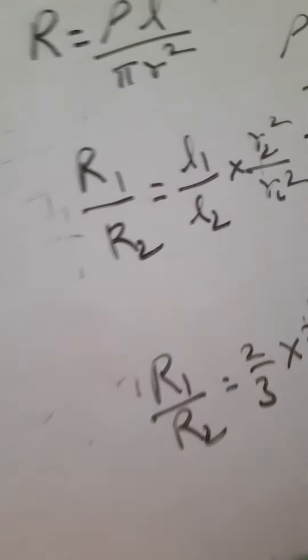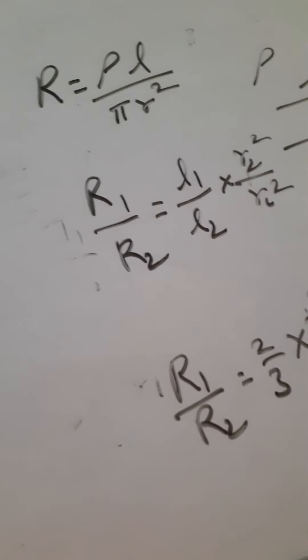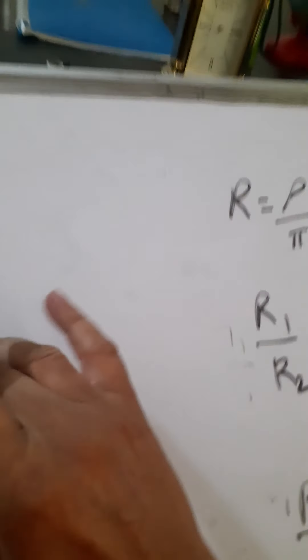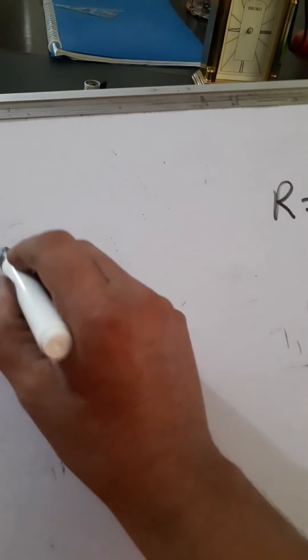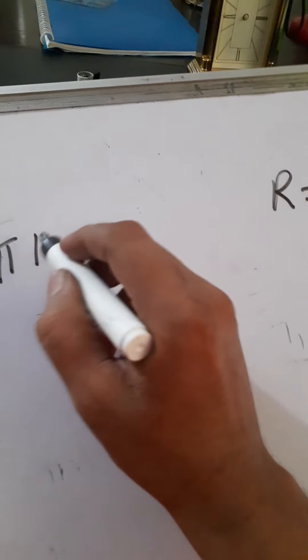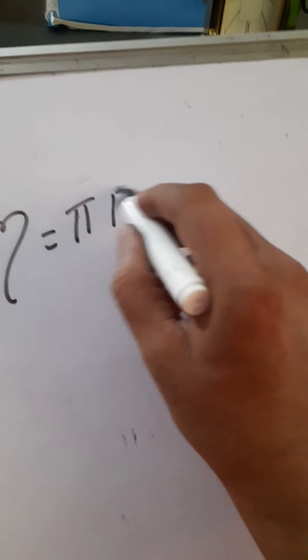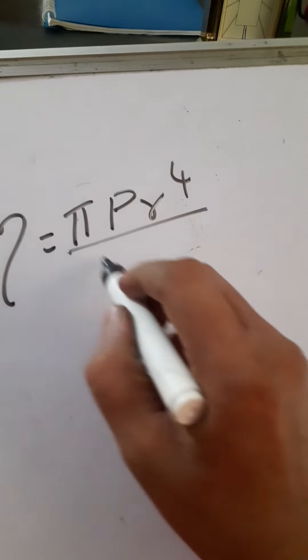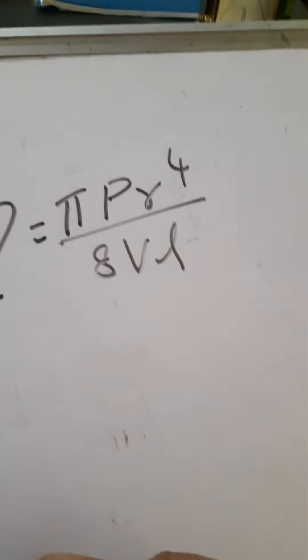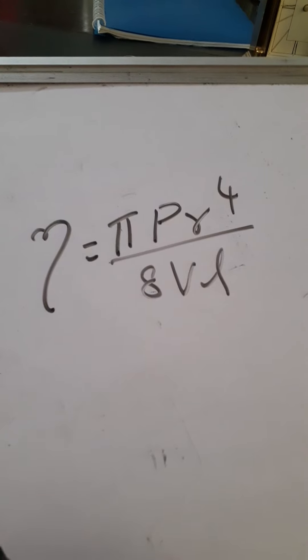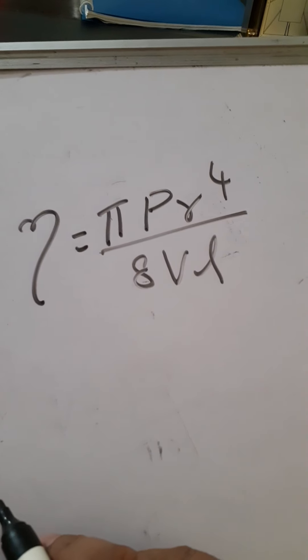Like that, in each and every problem, we get this type of relations. So this one is one of the important topics. For example, Coefficient of Viscosity in Poiseuille's Equation: Pi P r power 4 by 8 V L. Eta equals Pi P r power 4 by 8 V L.